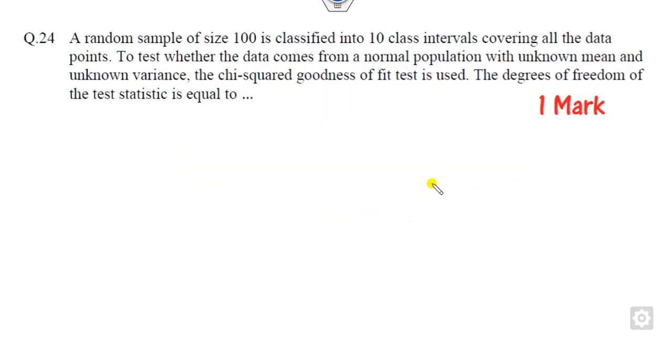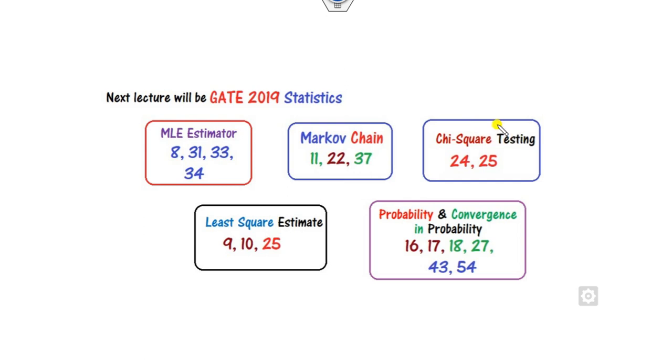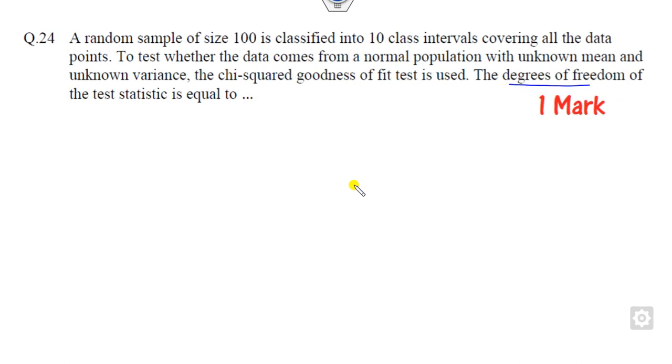First, let's look at what these questions are. Question number 24 asks us to find the degree of freedom of the test statistic. Question number 28 is also related to chi-square distribution, and we have to find the probability whether it is greater than or less than. So let's see how you can solve these two questions.